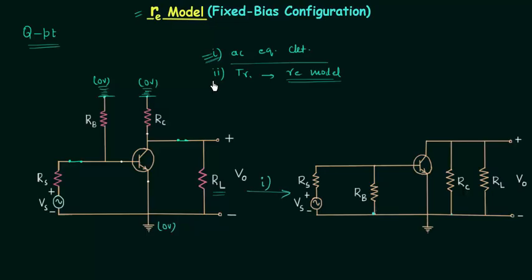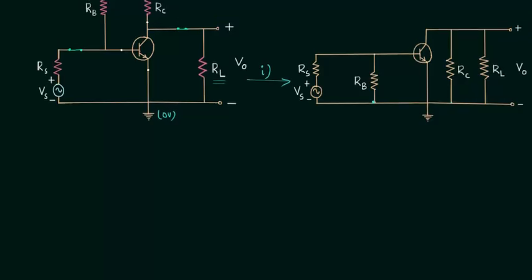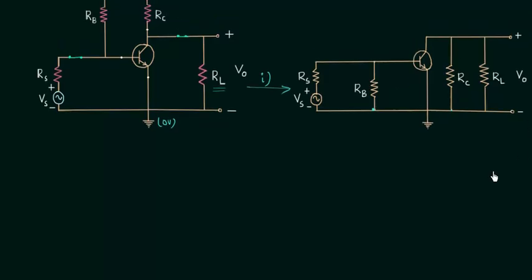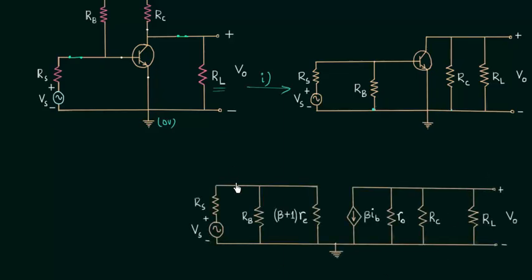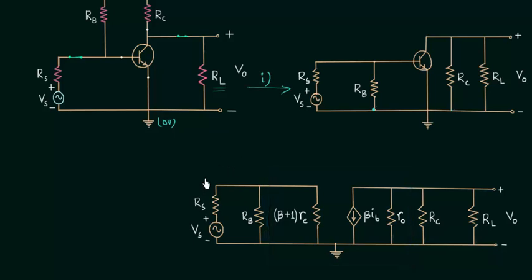Now we will move to the second step in which we will replace the transistor with the RE model. We are having the common emitter configuration, so the RE model we will draw is for the common emitter transistor. This is the final circuit after replacing the transistor with its RE equivalent model. The circuit inside the box is the RE equivalent model of the transistor, and we have obtained this circuit after completion of step number one and step number two.